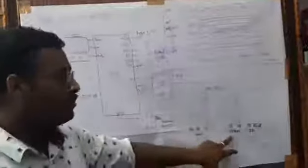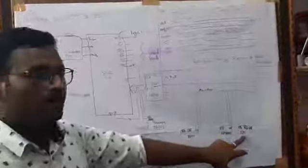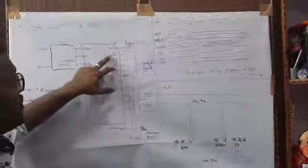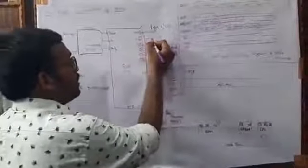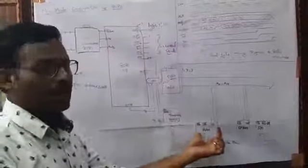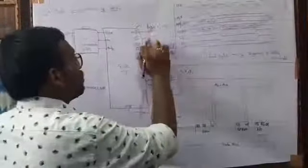From the address lines we are addressing the RAM, ROM, or I/O device. The control signal M/IO bar determines whether we are doing memory or I/O operations. If this pin is 1, we are doing memory operations; if this pin is 0, we are doing I/O operations.